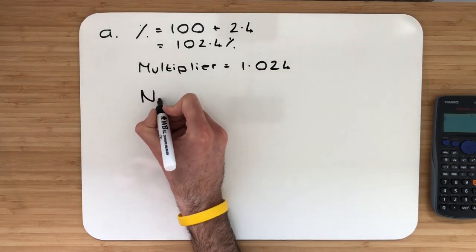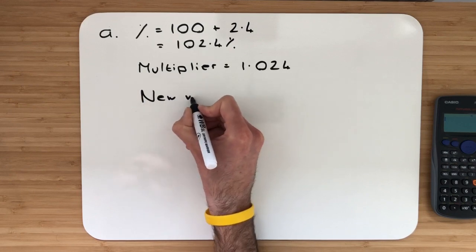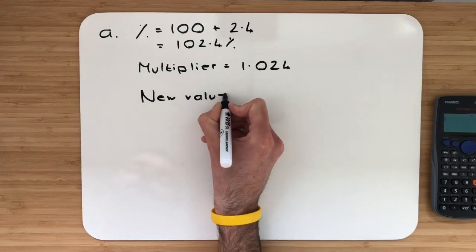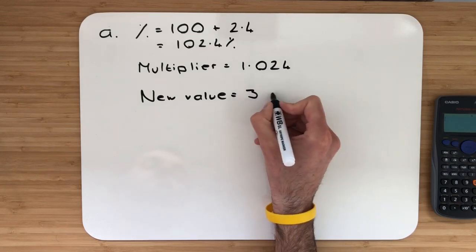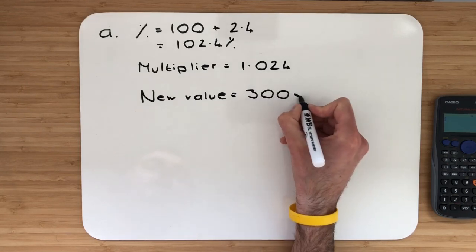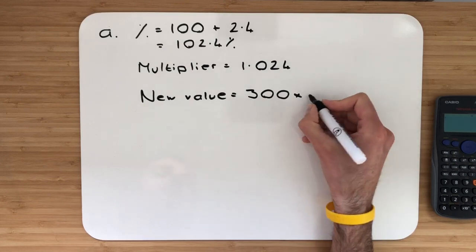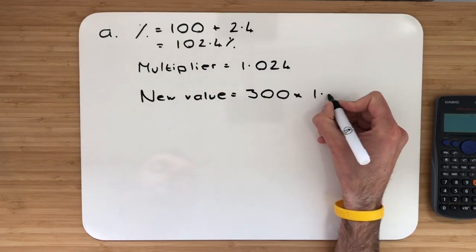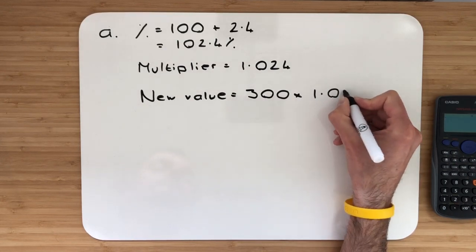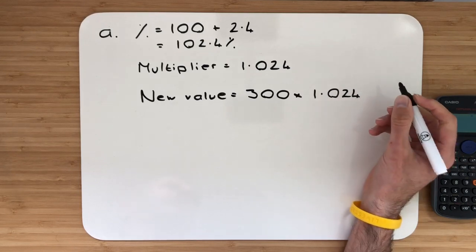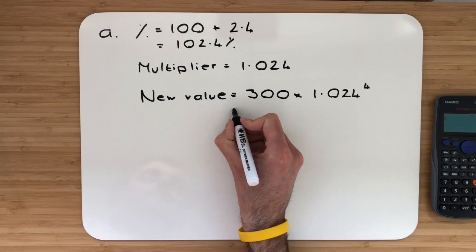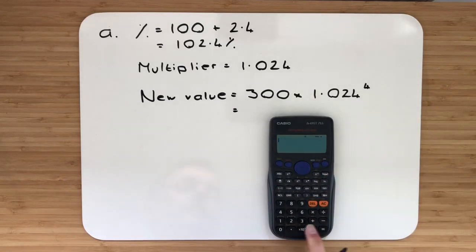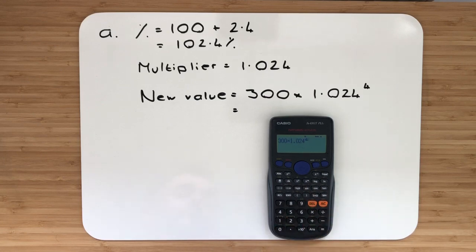Now I'm going to work out my new value. To get my new value, I'll take my starting value, which was £300, and multiply it by the multiplier, hence why it's called multiplier. So, multiply it by 1.024. And it's after 4 years, so let's put it to the power of 4. Typing that in: 300 multiplied by 1.024 to the power of 4.